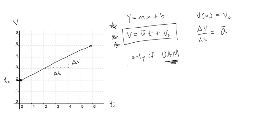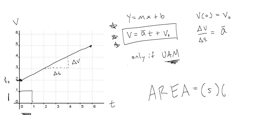Now we're going to look at the area of the velocity versus time graph, which is really important. The area has units of meters per second times seconds — the seconds cancel out, and what the area tells us is something about meters, which is the distance. The first people to show this were in the 1300s, known as the Oxford Calculators or the Merton School. This is sometimes referred to as Nicole Oresme's first contribution to mathematics.